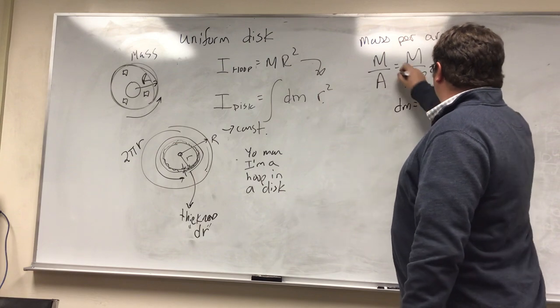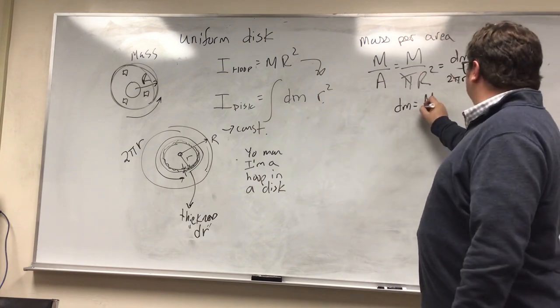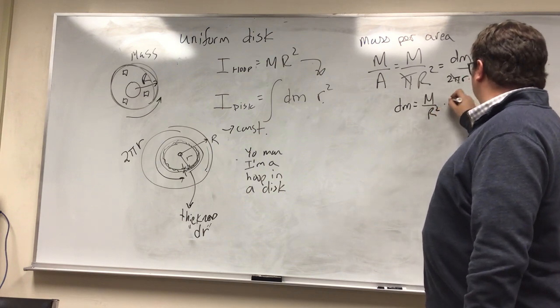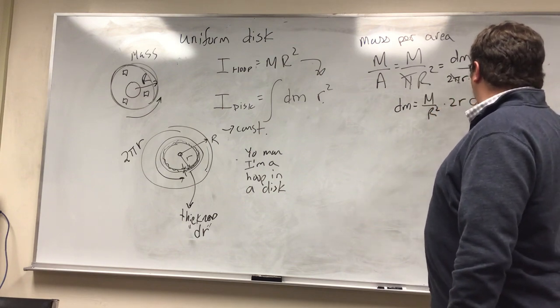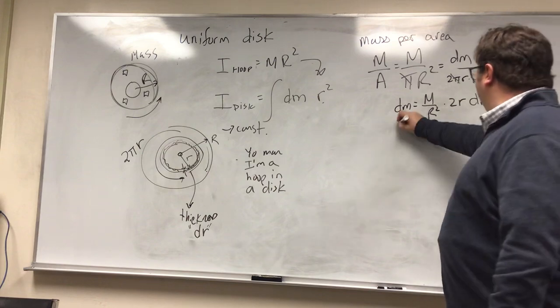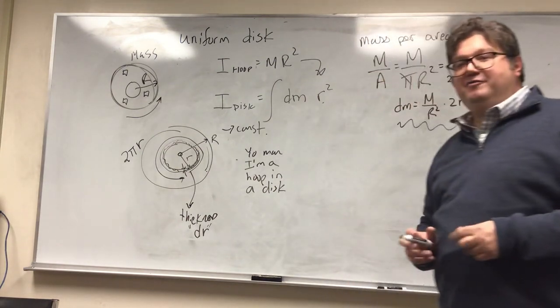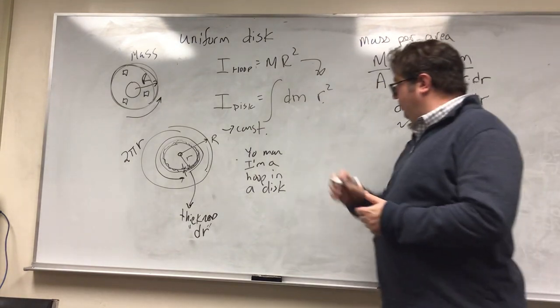We're going to get dm is, the pi's are going to cancel, dm is going to be m over r squared times 2r dr. And now we have an equation for the infinitesimal amount of mass. So we can take this bad boy and plug it in here.